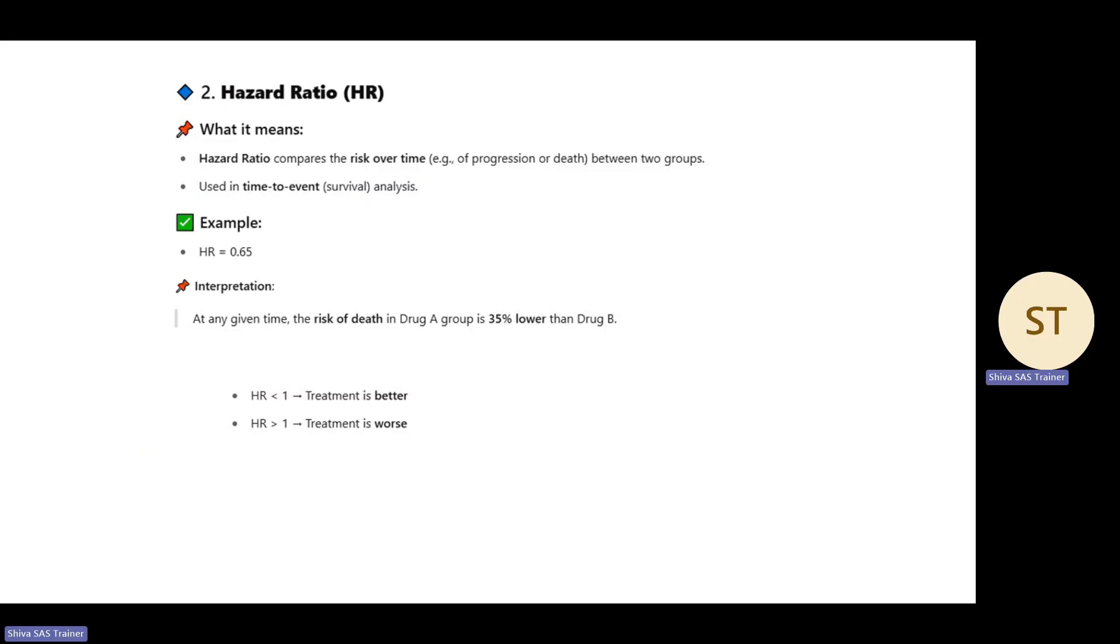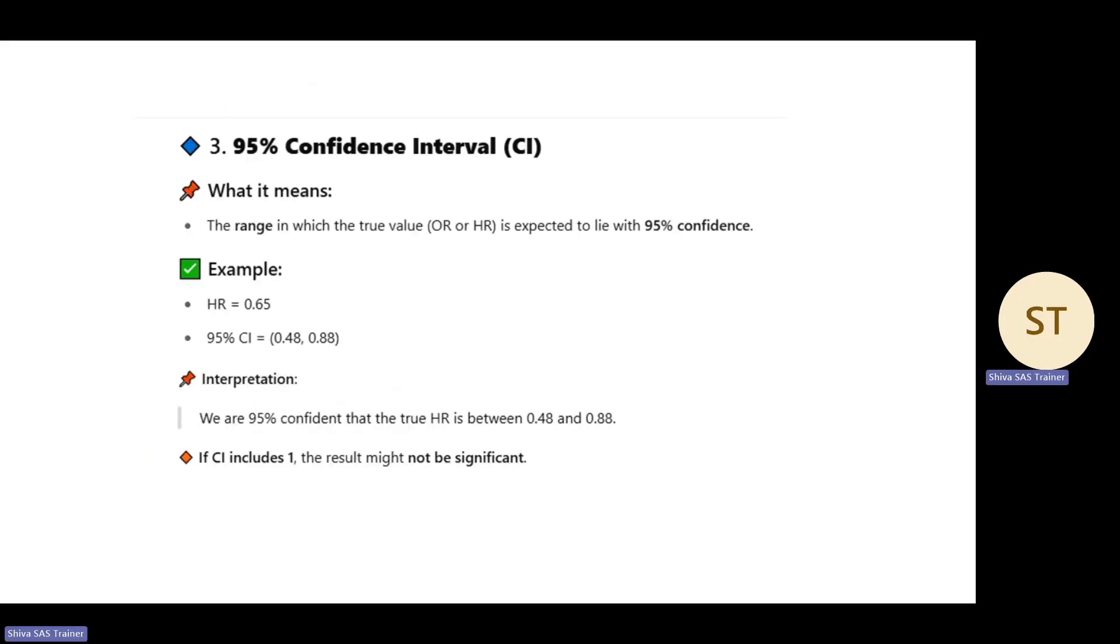What is 95% confidence interval? It's the range where the median value you're getting is 95% accurate. Your value is going to get in a particular range. If ranges are more wide, the value is not more accurate. If your range is shorter, the median value you're getting is more reliable. Here, 0.48 to 0.88 means we're 95% confident that your hazard ratio or median value is between these ranges only.